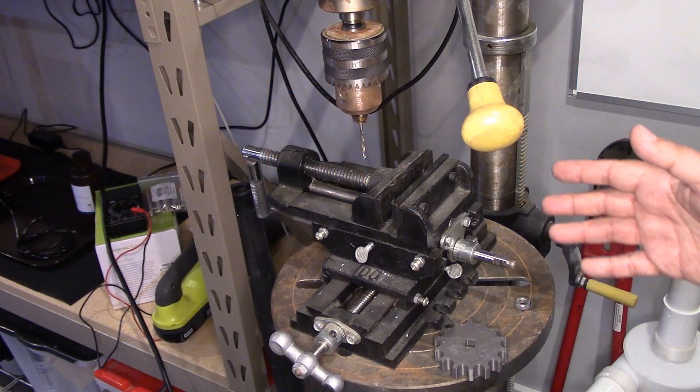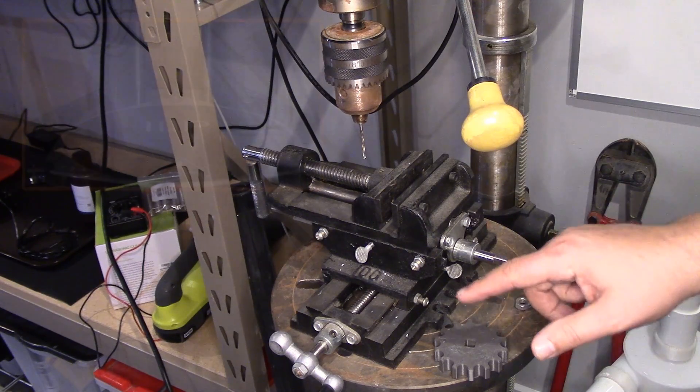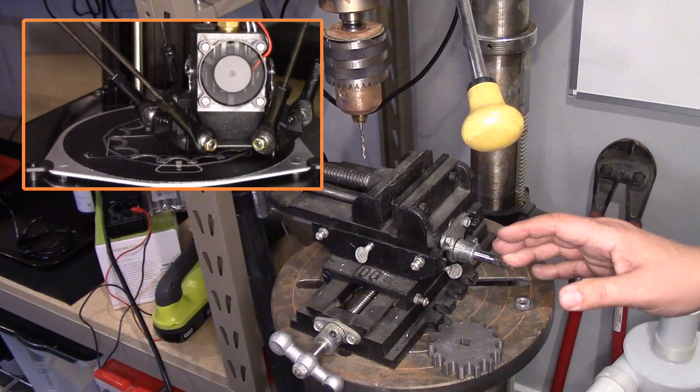Welcome to this episode of DIY3DTech.com. In this episode, I'm going to show you how I use Fusion 360 and 3D printing to fix a broken handle on the slide vise.